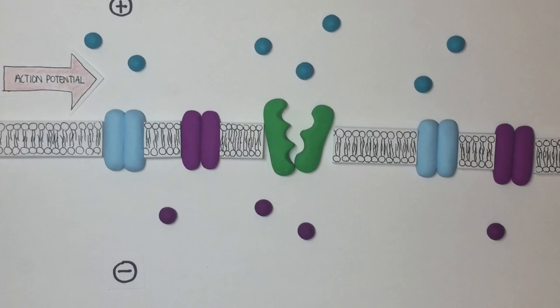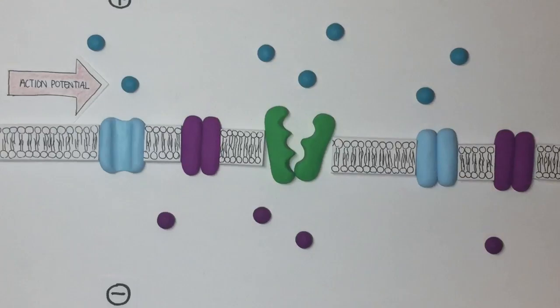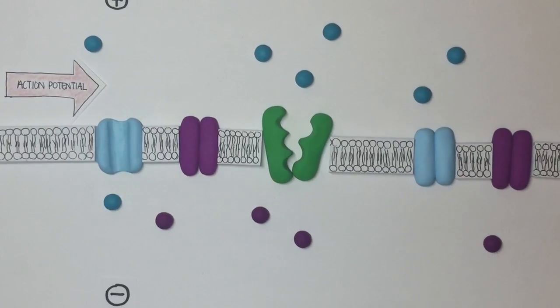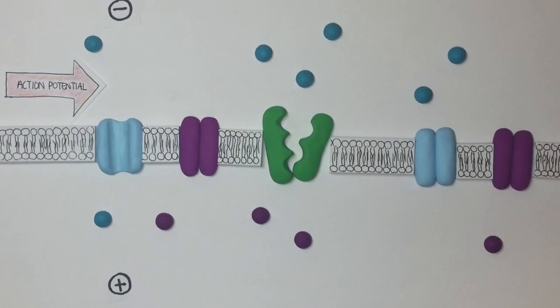Now this action potential is facilitated by the opening of these voltage-gated channels. Voltage-gated sodium channels will open and sodium will diffuse into the cell following the concentration gradient. This causes your local depolarization in which your charges change.